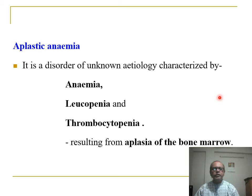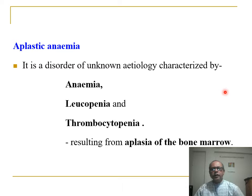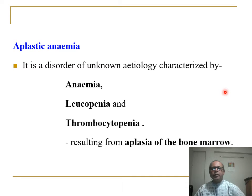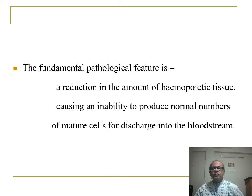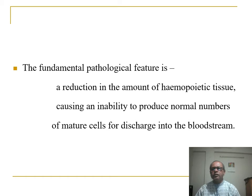Now we will talk about aplastic anemia, which is the most common cause of pancytopenia. Aplastic anemia is a disease of unknown etiology characterized by anemia, leukopenia, and thrombocytopenia resulting from aplasia of the bone marrow. It differs from pancytopenia because here aplasia of the bone marrow occurs. The fundamental pathological feature is the reduction in the amount of hemopoietic tissue, causing inability to produce normal numbers of mature cells for discharge into the blood.